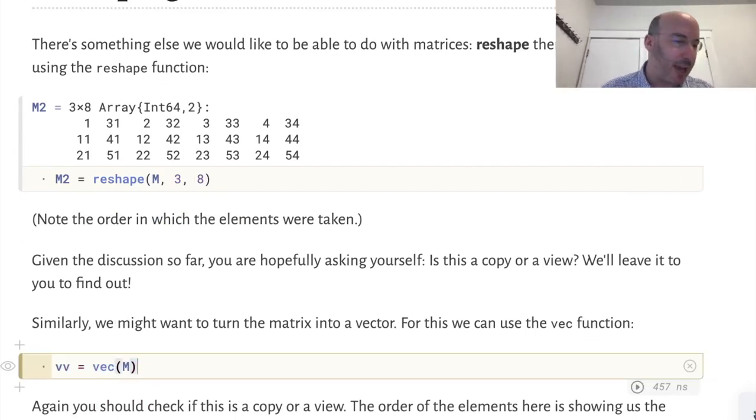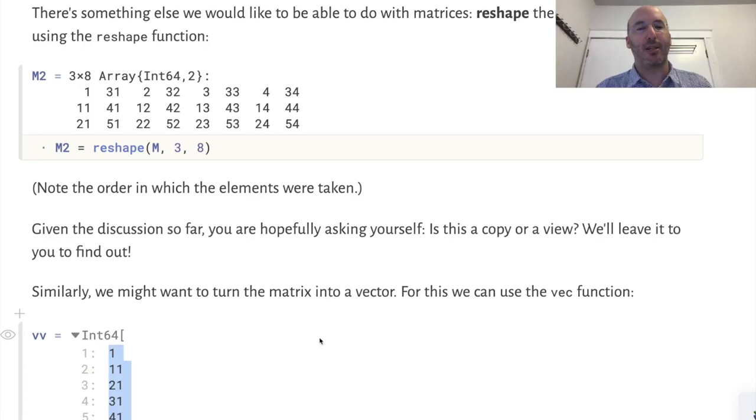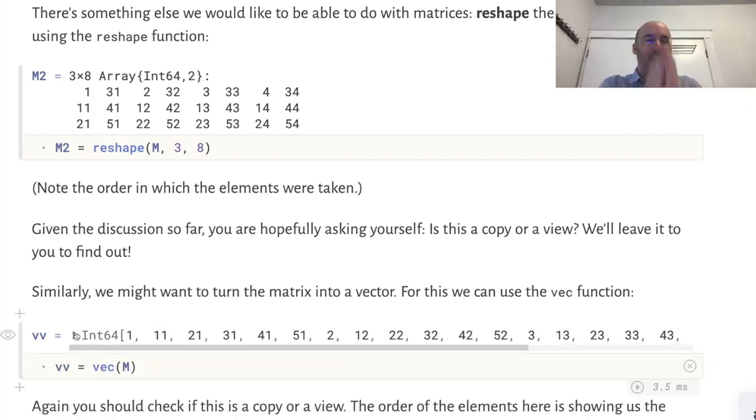There's another useful function called vec which takes a matrix and turns it into a vector. It's taking each element one by one in a certain order and putting them into a vector. This order reflects the underlying way the matrix is stored in memory. The computer's memory is linear with a sequence of boxes in a row. We have a two-dimensional object, so we have to make a choice about how we store that matrix. Julia makes one particular choice called column major, taking columns first, moving down each column and putting those elements into the vector. Again, you have to ask, is vec making a copy or making a view?